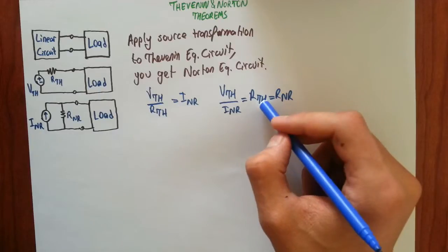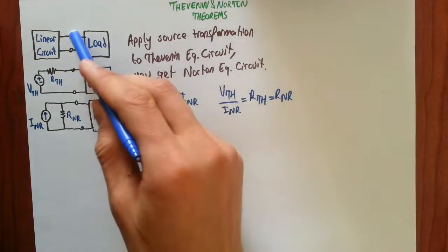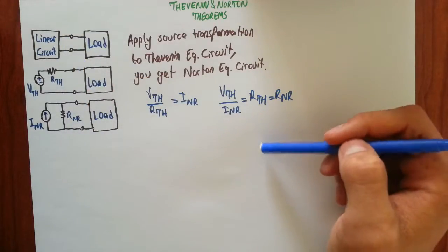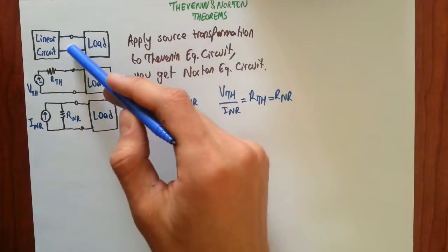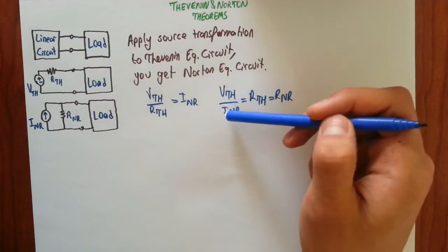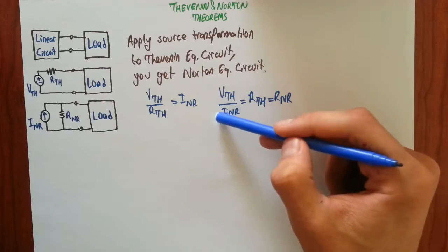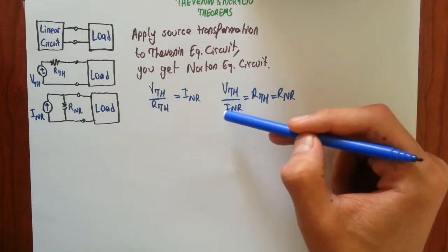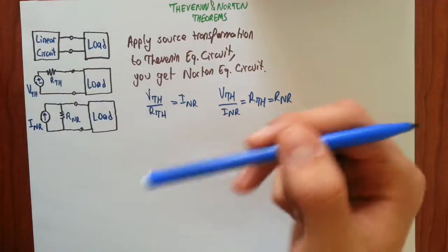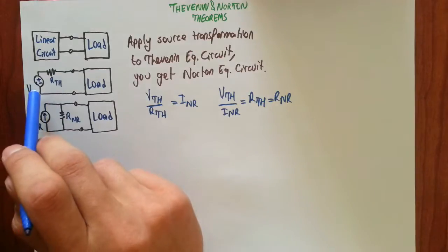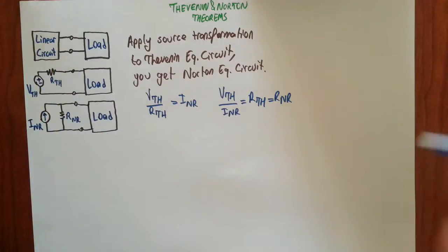Instead of killing sources — and if there are dependent sources, instead of connecting a test voltage source between A and B terminals — you can first find the voltage difference between A and B terminals, then find the short circuit current between A and B terminals, and lastly divide them to find the equivalent resistance between those two terminals.